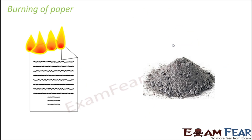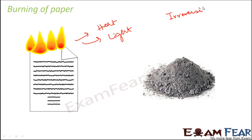The next example is burning of paper. When we burn paper, all we get is ash — a new substance altogether. Paper is made up of polysaccharides, while ash has a different chemical composition. During burning, a lot of heat and light are produced, and the change is irreversible because you cannot convert ashes back into paper. So burning of paper is a chemical change.